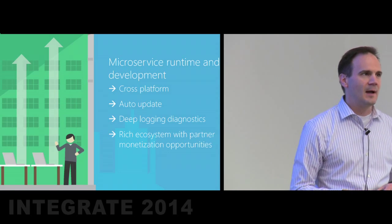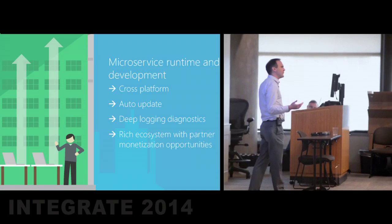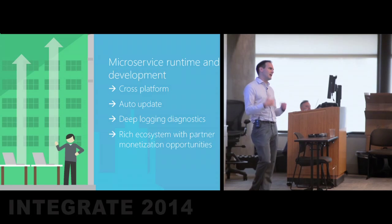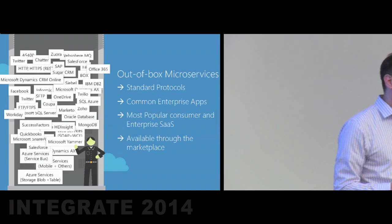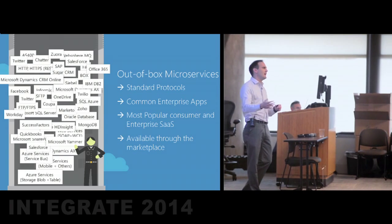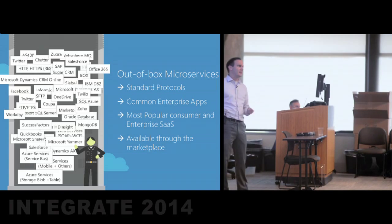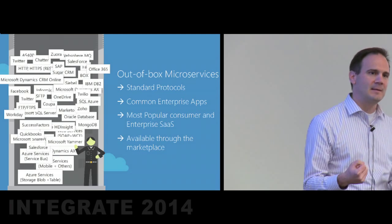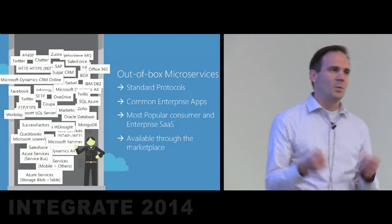On top of that microservice runtime, we're going to provide a whole set of microservices out of the box. We've been investing to bring literally dozens of the most high-priority connectors that our customers are telling us they want. We'll have support for all the standard protocols that you see in BizTalk Server today, as well as common enterprise apps on-premise and popular consumer and enterprise SaaS systems — everything from Twitter and Facebook for consumer sentiment data, to SaaS systems like Office 365, Salesforce, Workday, Concur, etc. These will all be available through the marketplace as we launch the new preview.